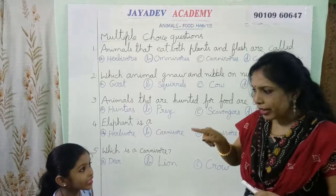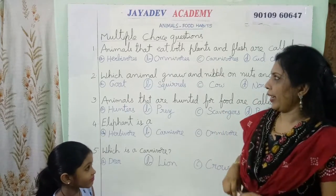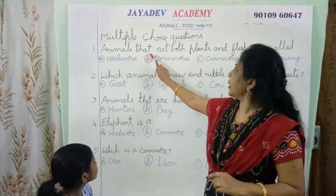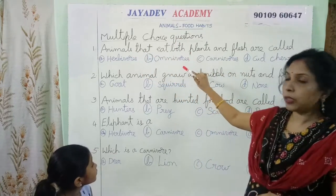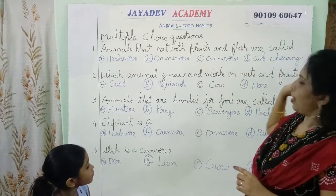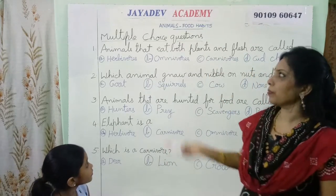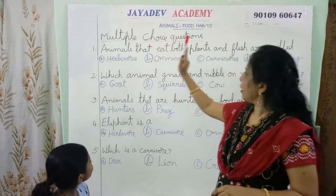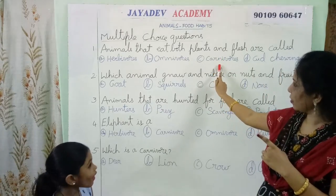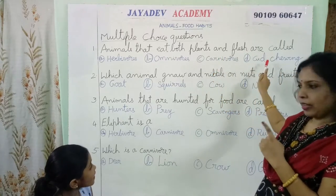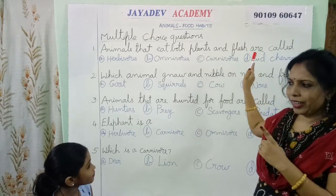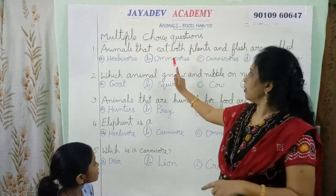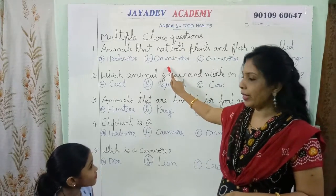Are you ready, my dear? Okay, the first one is: animals that eat both plants and flesh are called — herbivores, carnivores? No. Then the correct answer is omnivores. Very good, it is omnivores.